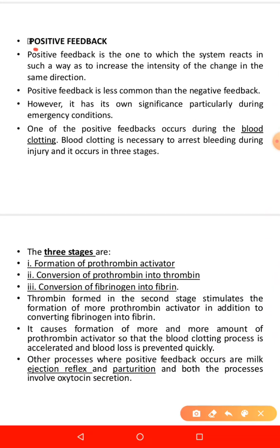Now, positive feedback mechanism is the opposite of negative feedback. It is one in which the system reacts in such a way as to increase the intensity of the change in the same direction. Positive feedback is less common in the human body. The common homeostatic mechanisms are negative feedback mechanisms. However, positive feedback has its own significance, particularly during emergency conditions.